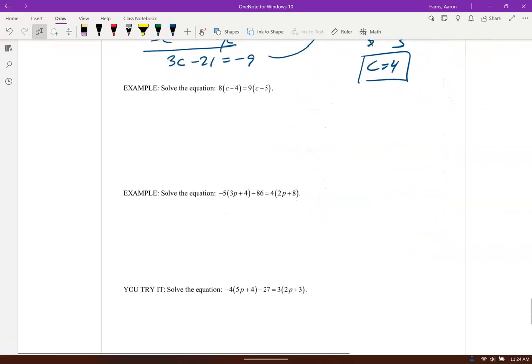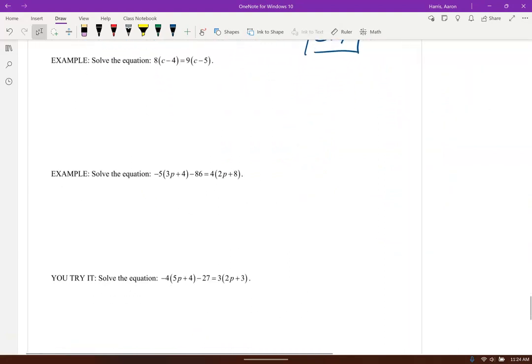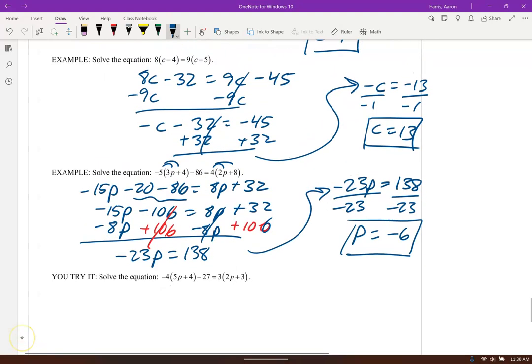I'm going to have you guys try these three right here. Check yourself on the first two. Pause it if you need to. And let's go ahead and get into this last one here. Negative 20p. Negative 4 times negative 4 minus 16. Distribute here. I'm going to go ahead and combine those. What's that, negative 43.